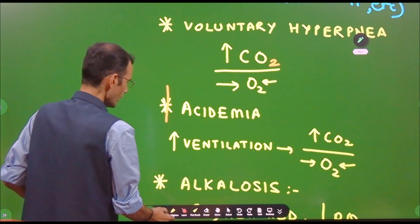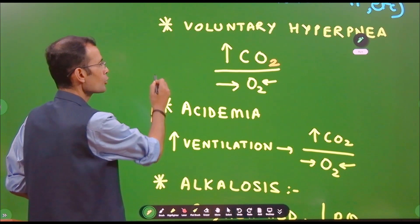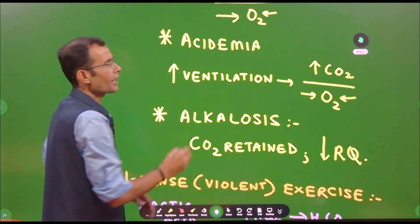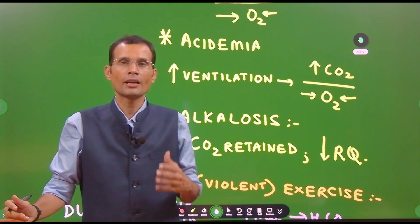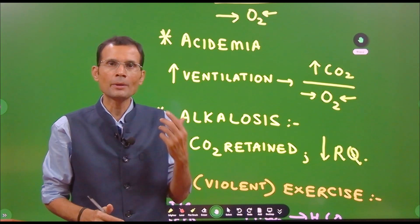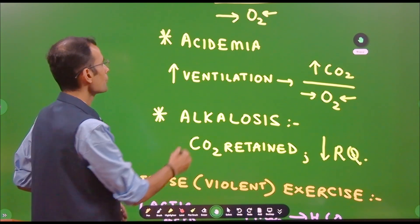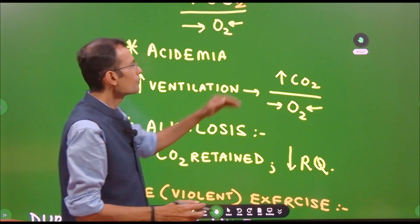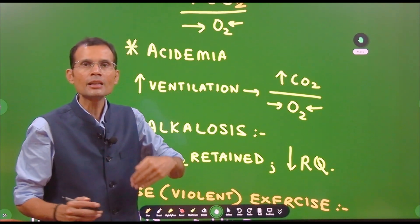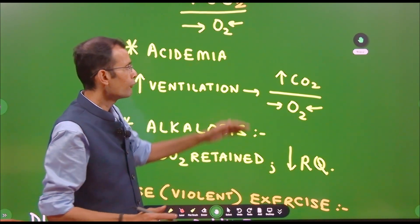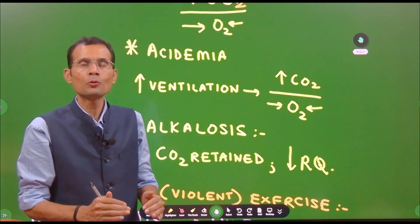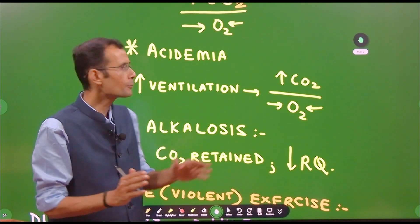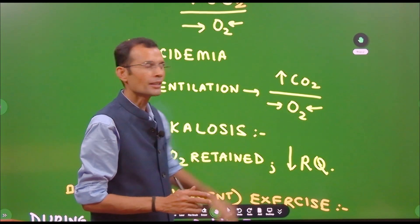What happens in the case of acidemia? Whenever there are increased acids, they stimulate ventilation via peripheral chemoreceptor stimulation. When ventilation is stimulated, again increased CO2 is liberated in the alveoli for the same amount of O2 being consumed, and therefore the respiratory quotient will be higher — it will increase.